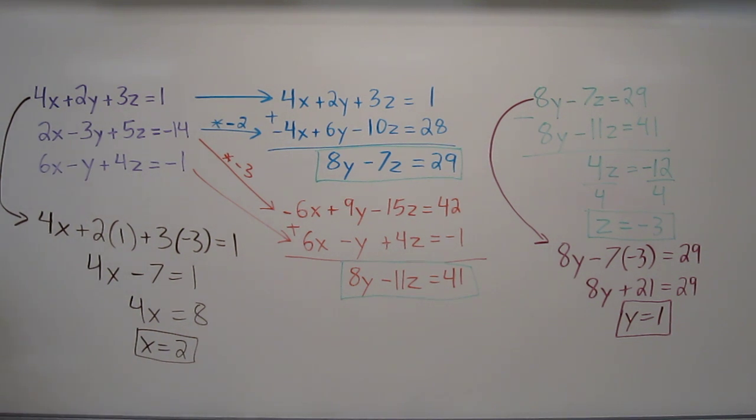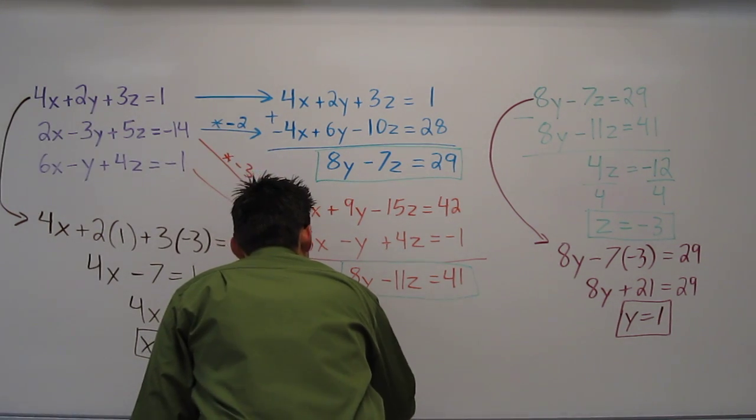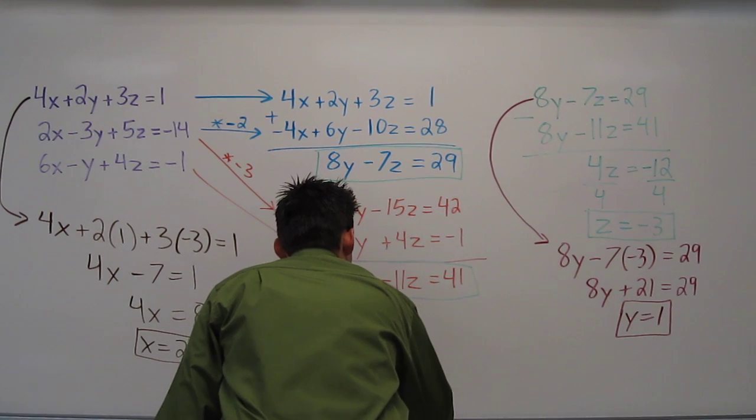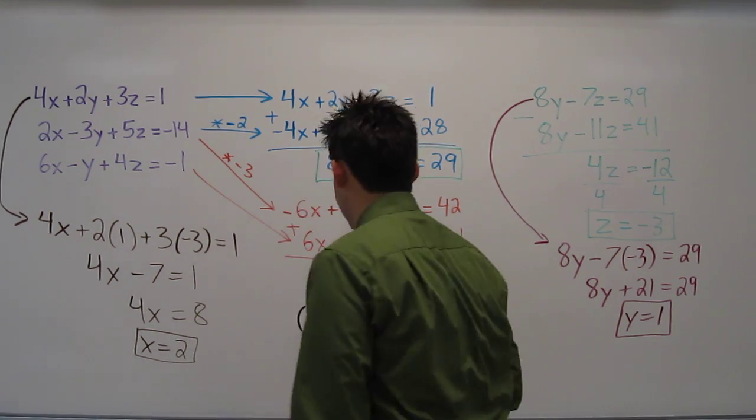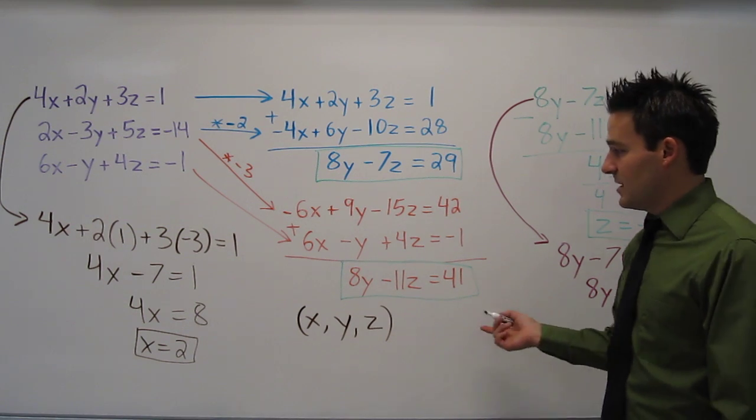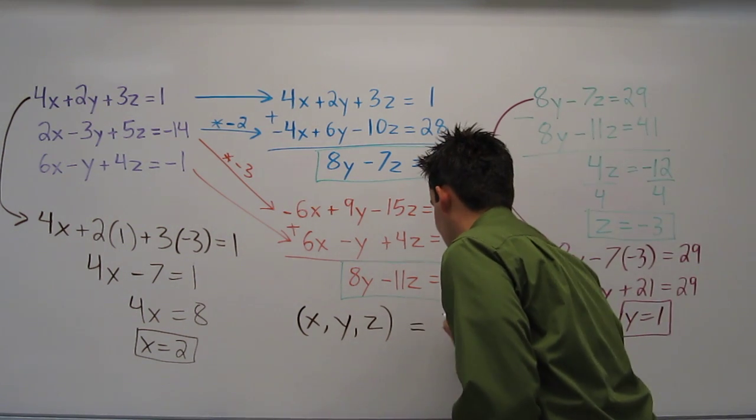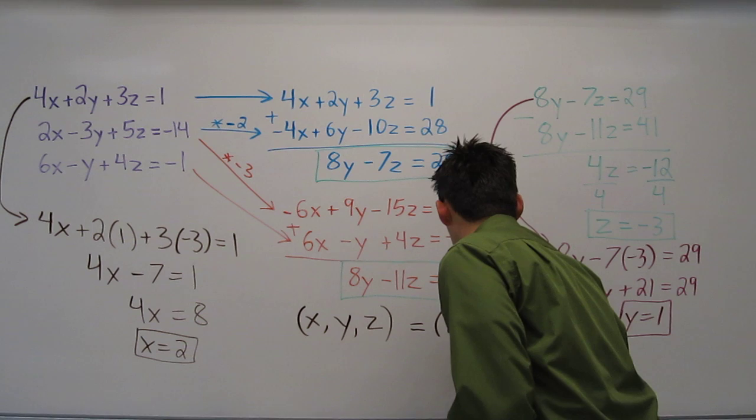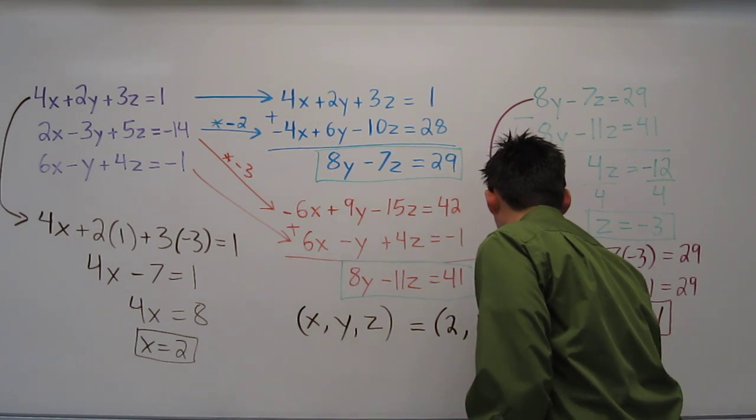Now the best way to write our answer for x, y, and z is in the form of an ordered triple. That is, we write x, y, z, similar to an ordered pair where we write the x, y coordinates. So in this case, x, y, z equals 2, 1, negative 3.